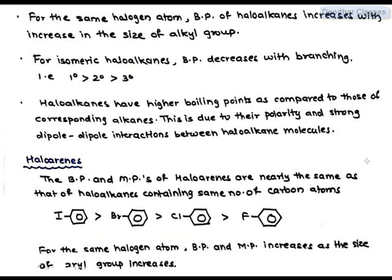But in the case of isomeric haloalkanes, where R is the same, where R contains the same number of carbons and halogen is also the same, in such cases boiling point will decrease with branching. This is because with branching, surface area decreases.